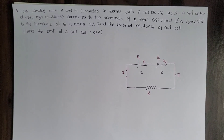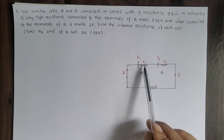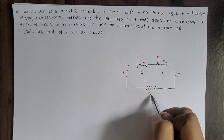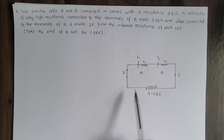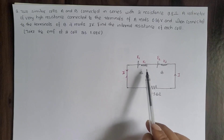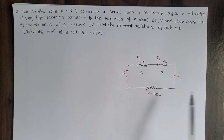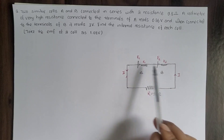Hello students, this video is class 11 DC. The question is on the screen: two similar cells A and B connected in series with a resistance of 9.8 ohm. A voltmeter of very high resistance connected to the terminals of A reads 0.96 volt, and when connected to the terminals of B it reads 1 volt. Find the internal resistance of each cell, R1 and R2.